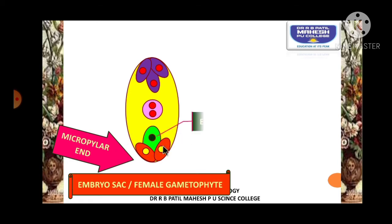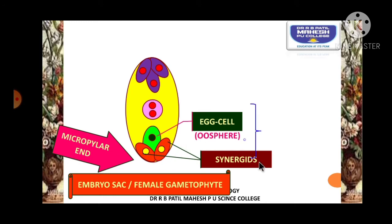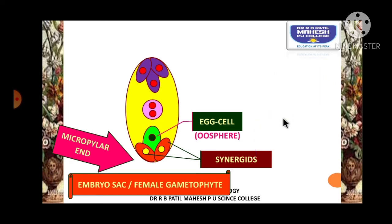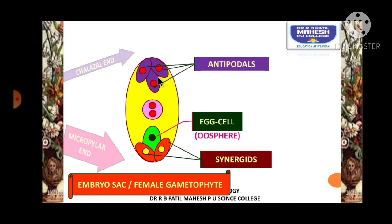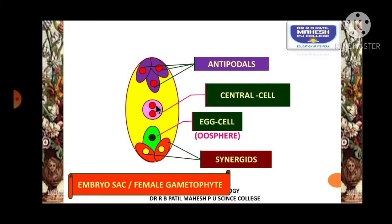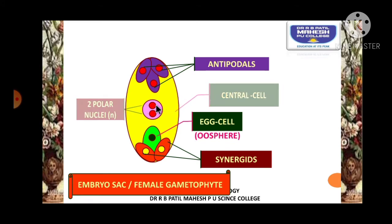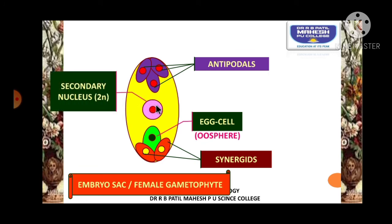The micropylar end contains the egg cell and the synergids. The egg cell is also called oosphere, and the neighboring cells are called synergids. These 3 cells together make the egg apparatus of an embryo sac. The chalazal end contains 3 cells called antipodals. The antipodals, egg cell, and the central secondary nucleus — which contains 2 polar nuclei — will be connected by means of plasmodesmata.